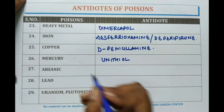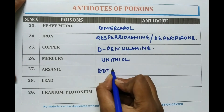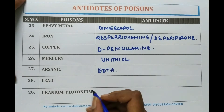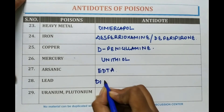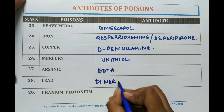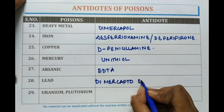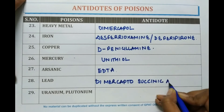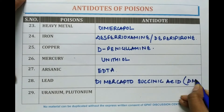In arsenic poisoning, EDTA is given. In lead poisoning, dimercaptosuccinic acid, abbreviated as DMSA, is suggested.